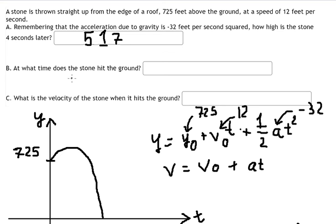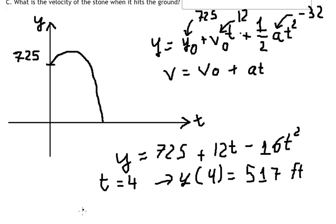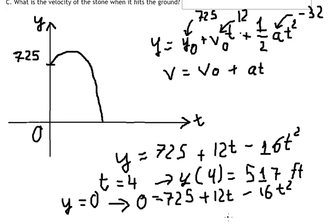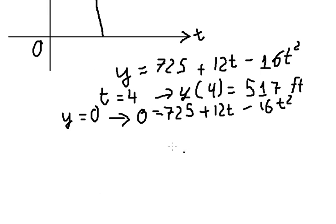For question number two — what time does the stone hit the ground — that means y equals zero. When the stone hits the ground, y equals zero, so we substitute zero in for y in the equation. We then solve for t and get t equals approximately 7.11169.